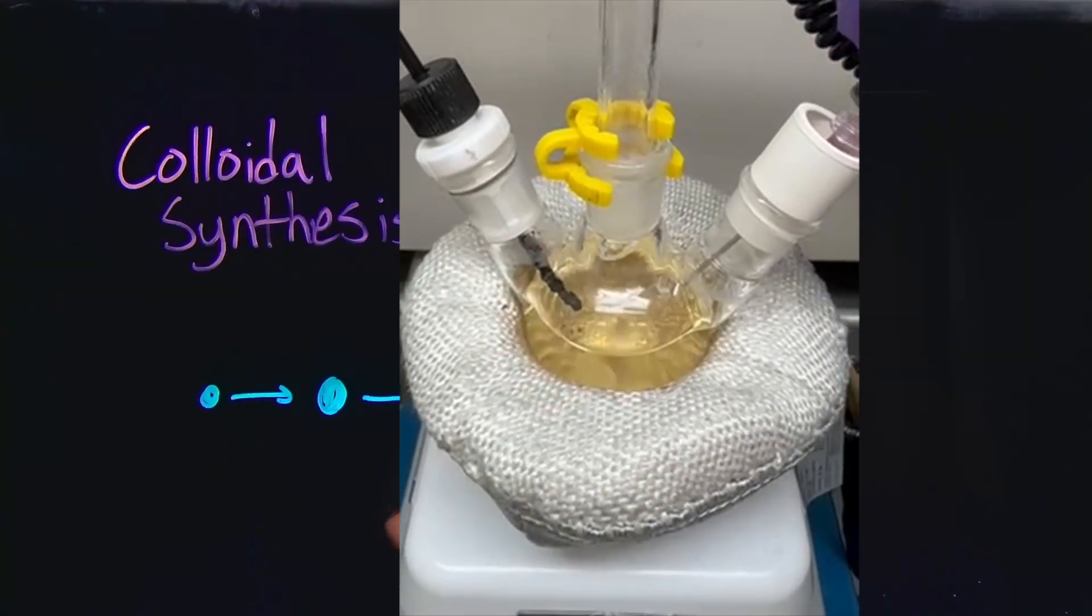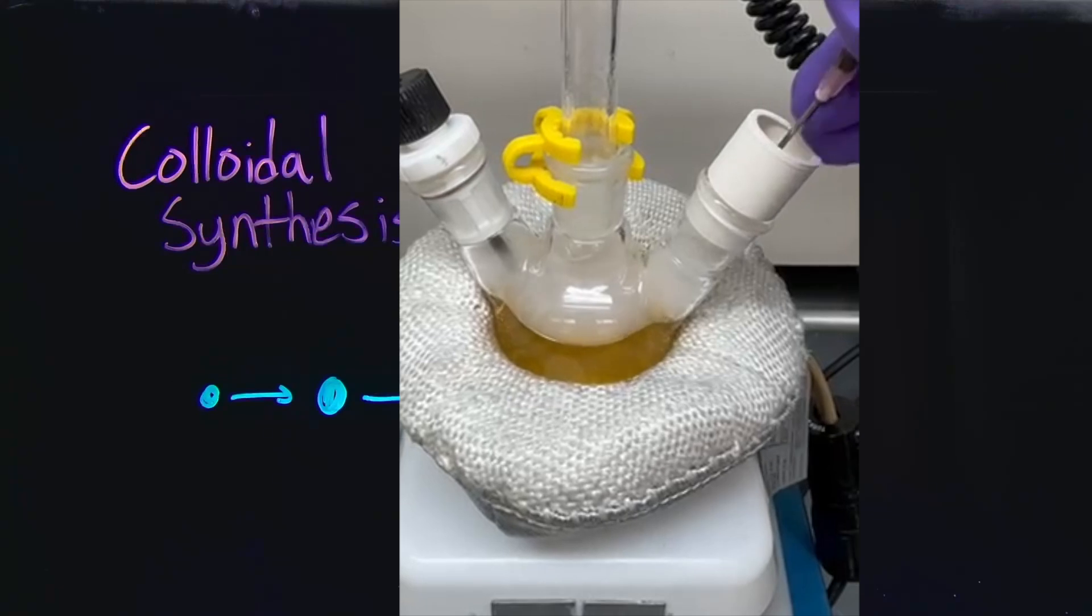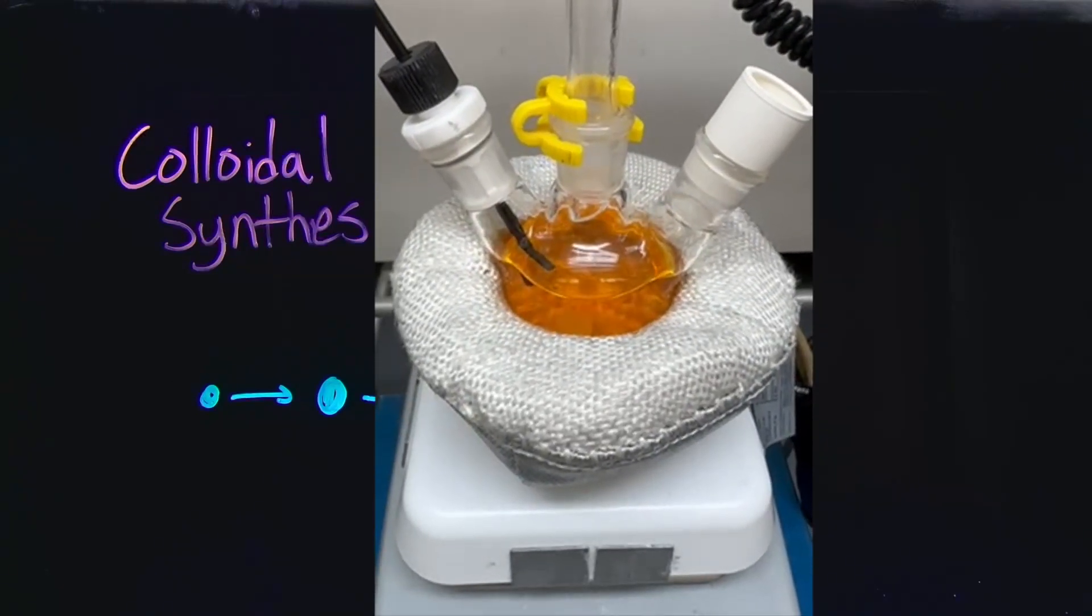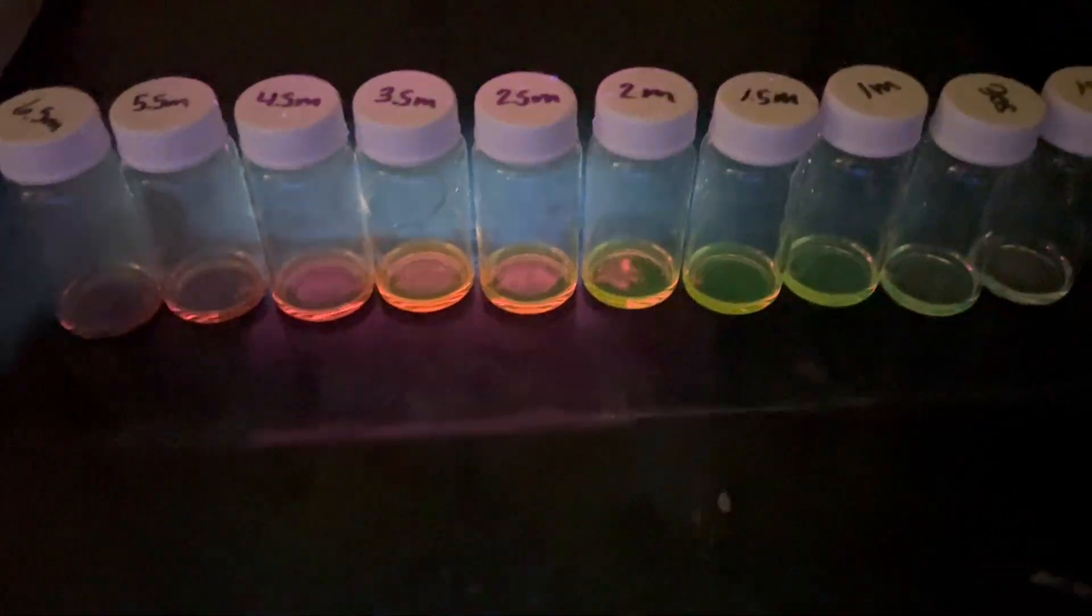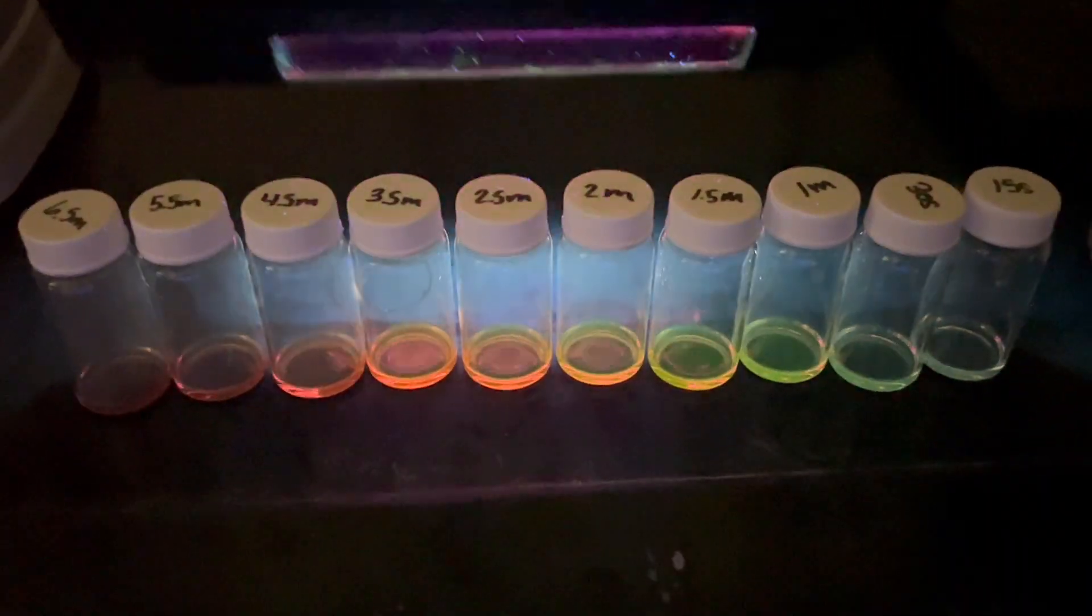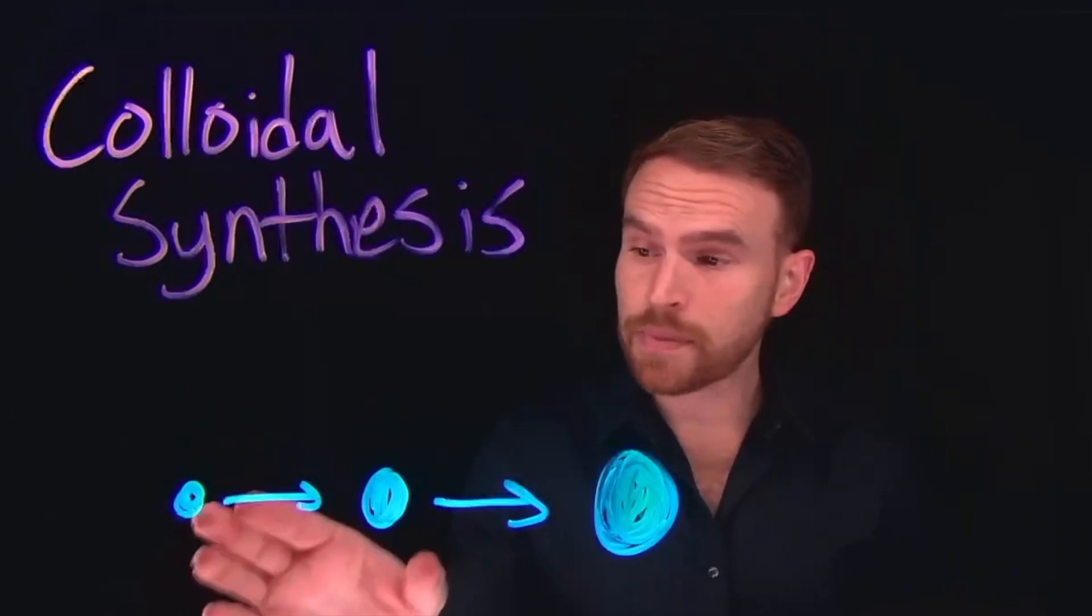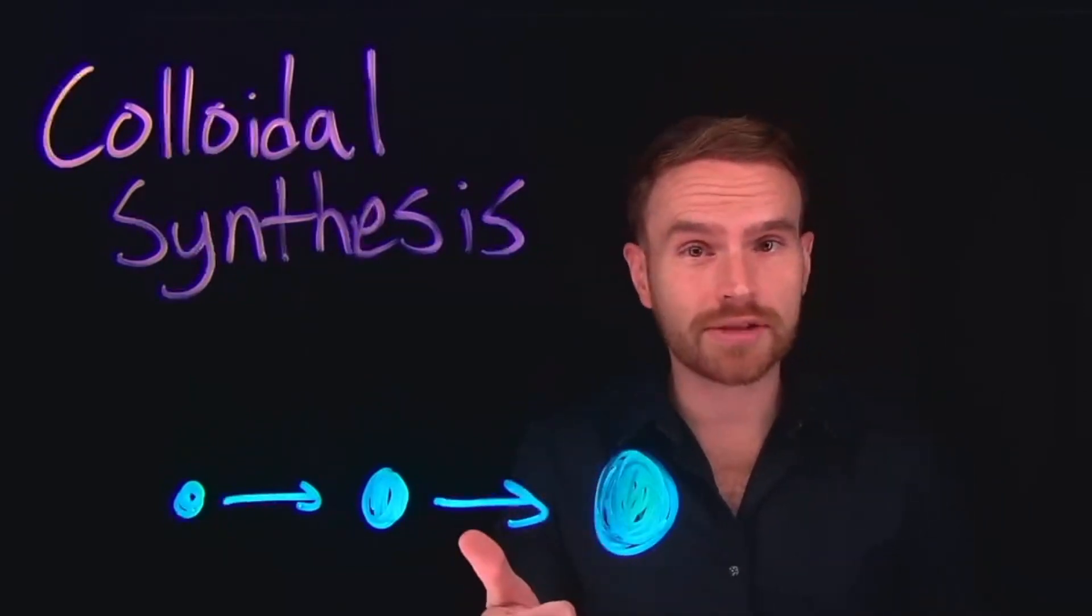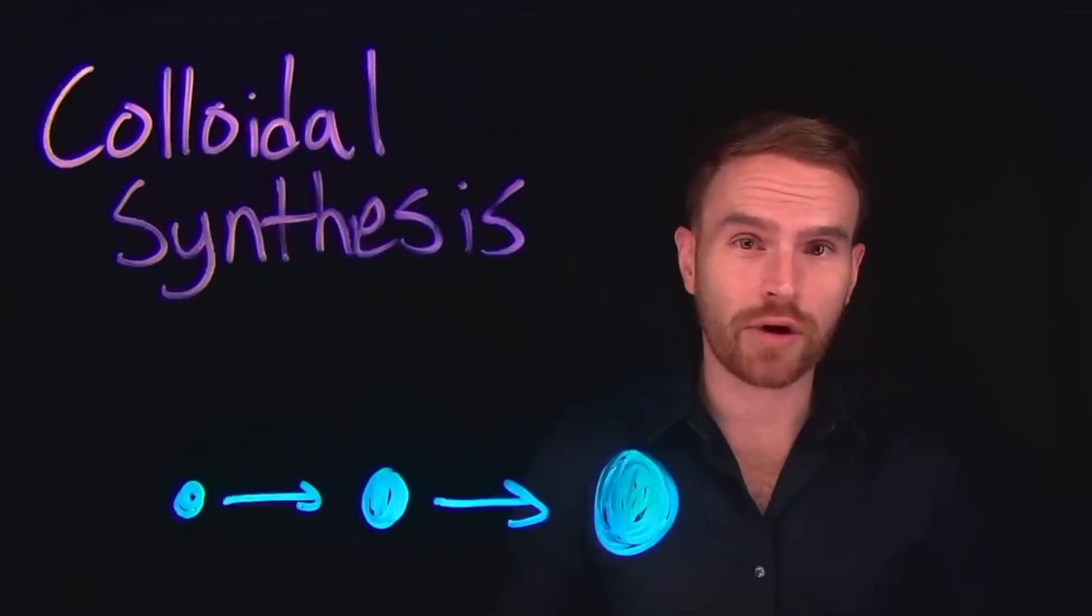During synthesis, controlling the size of the dots is critical because, as we mentioned earlier, the size directly impacts their optical and electronic properties. Different methods allow scientists to fine-tune quantum dots for specific applications. And remember that this ability to fine-tune the electronic properties of these quantum dots just adjusting for the particle size gives rise to typical uses in things like solar cell technology and even things like medical imaging.